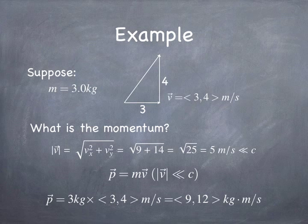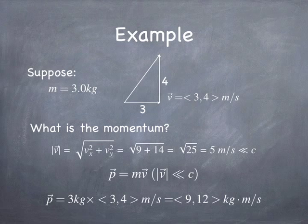To calculate the rate of change of momentum, you compute the momentum at the beginning, the momentum at the end, subtract them, and divide by the time — that gives the rate of change of momentum. We'll find out in chapter two that this is nothing other than the net force. That's all for chapter one; see you next time.